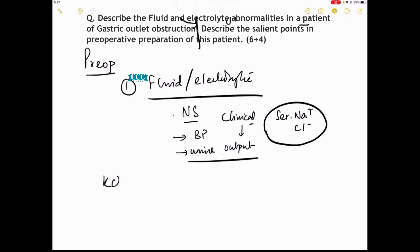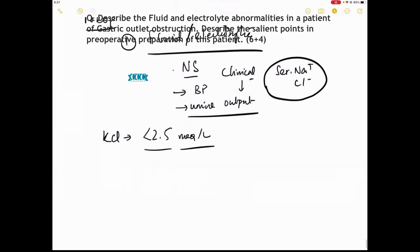The addition of potassium chloride is done if the potassium has gone below 2.5 milliequivalent per liter. Potassium chloride is added at the rate of one milligram per kilogram per day.